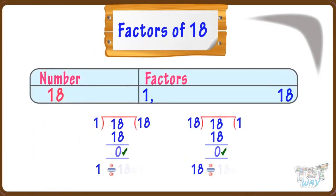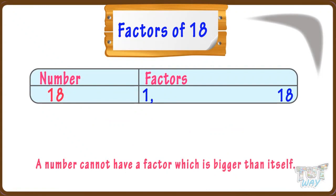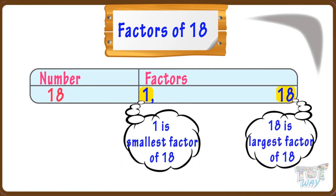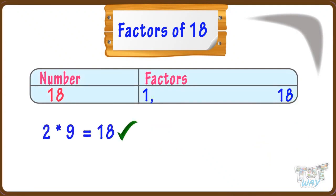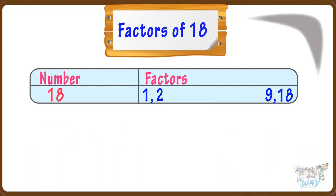So 1 and 18 are factors of 18. Also, a number cannot have a factor which is bigger than itself, so factors of 18 can be between 1 and 18. Now let's find more factors. 2 × 9 = 18, so 2 and 9 are factors of 18. And 3 × 6 = 18, so 3 and 6 are also factors of 18.